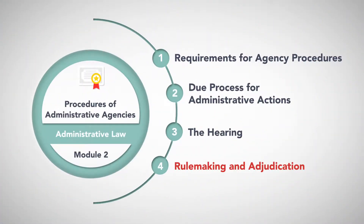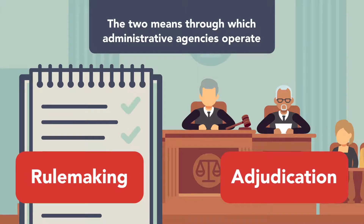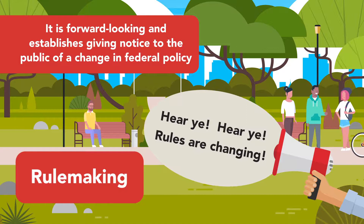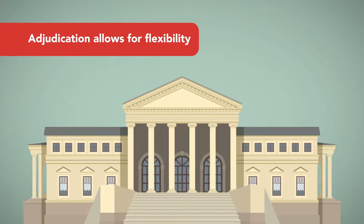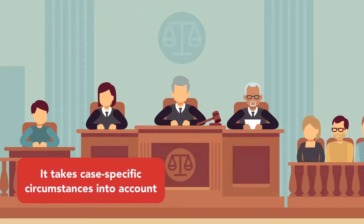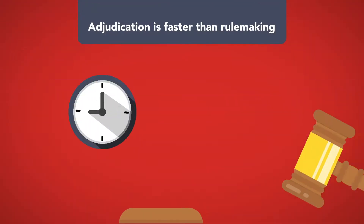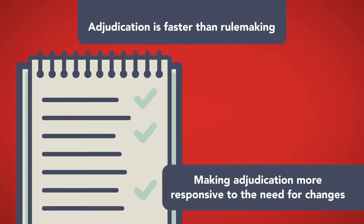Rulemaking and Adjudication. The two means through which administrative agencies operate are through issuing binding rules and through case-by-case adjudicatory orders. Each method has its own advantages. Rulemaking may be more efficient because it is forward-looking and establishes notice to the public of a change in federal policy. Moreover, a rule cannot be appealed, unlike an adjudication. On the other hand, adjudication allows for flexibility — it takes case-specific circumstances into account and may be applied retroactively to remediate past matters, unlike rulemaking which can only apply to future actions. Adjudication is also faster than rulemaking and can be reversed more easily, making it more responsive to the need for changes.